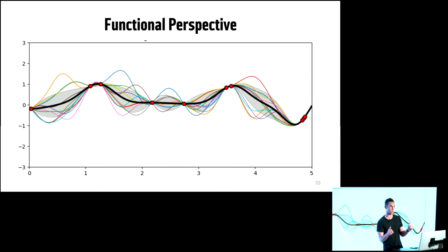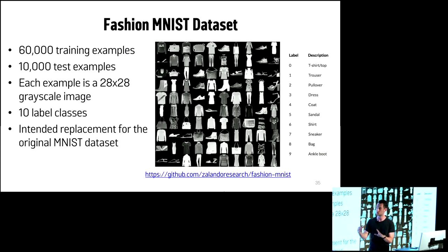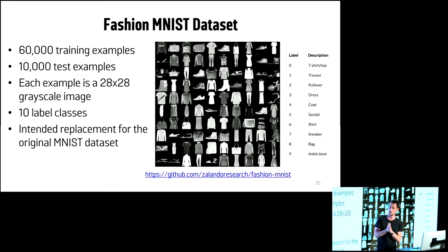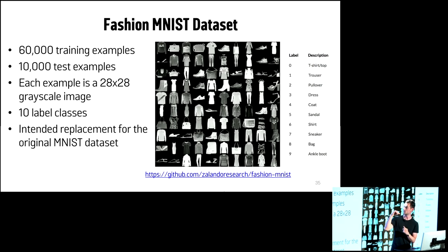Putting this all together with many hyperparameters, how can we gauge the optimal set? This leads us to the demo. We'll look at an image classification problem using the Fashion MNIST dataset. Where we had handwritten digits in the original MNIST, here we have 60,000 training examples of grayscale pictures of clothes released by the fashion company Zalando — same setup as MNIST with 60,000 training examples, 10,000 test examples, each a grayscale picture of 28 by 28 pixels.